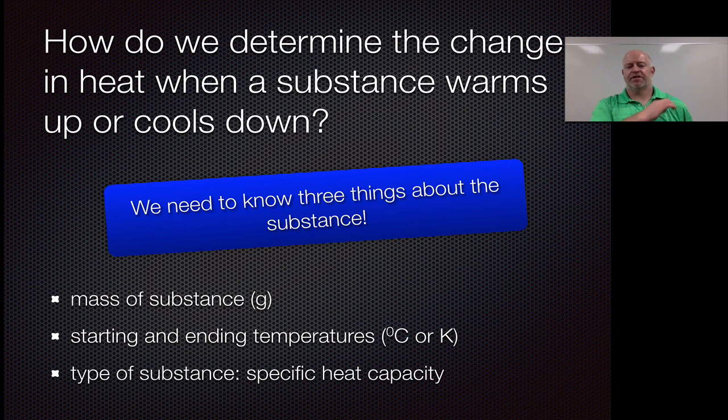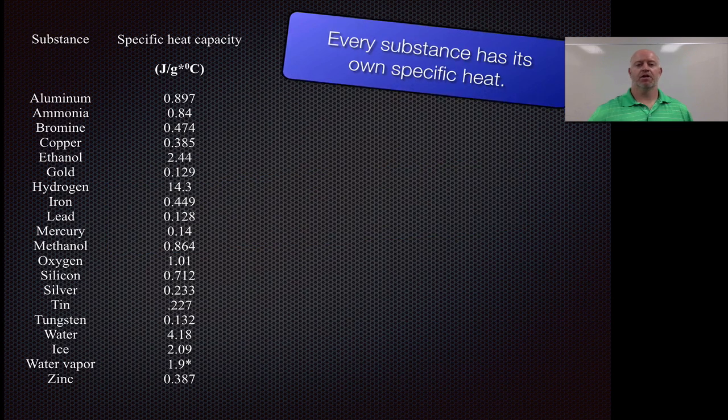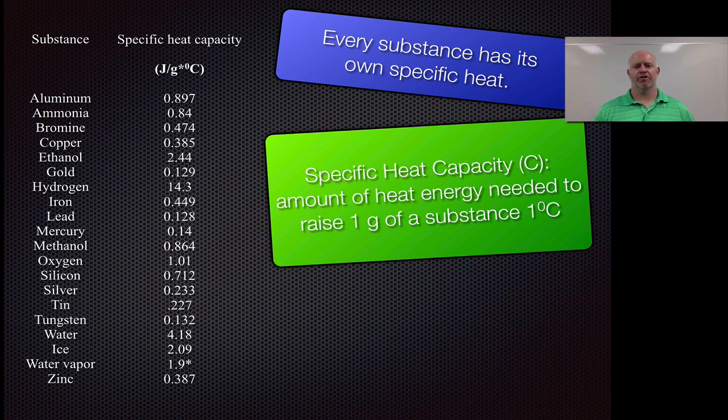So let's take a look at those things in a little bit more detail, and in particular let's take a look at this idea of the type of substance because we have a new term here called specific heat capacity. So what we're looking at is when you have every single substance, it has its own specific heat capacity or basically this capacity to absorb and release energy, and it's actually a numerical value that we can use as part of our calculation. So here's a list of specific heat capacities. You see aluminum there is 0.897 and ethanol is 2.44 and so forth and so on.